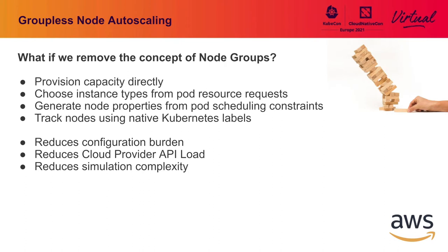We spent a fair amount of time in the node auto-scaling space, trying to understand the root cause of all these issues. Some were just code bugs in our cloud provider implementation — things we could fix and did fix. Sometimes it was just customer configuration, since these things are really hard to get right and easy to misconfigure. But part of it was just architectural: by nature of having node groups, you take on certain assumptions, and that's where we decided a lot of the inefficiencies were coming from.